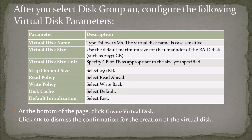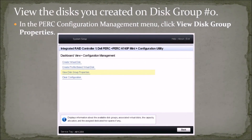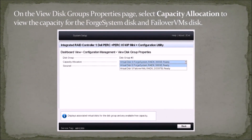At the bottom of the page, click Create Virtual Disk. Click OK to dismiss the confirmation for the creation of the virtual disk. View the disks you created on disk group number 0. In the PERC configuration management menu, click View Disk Group Properties. On the View Disk Groups Properties page, select Capacity Allocation to view the capacity for the Forge system disk and Failover VMs disk.